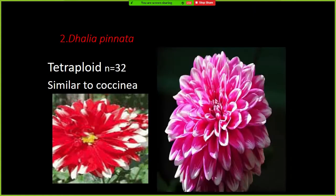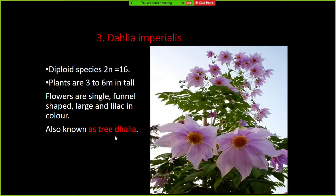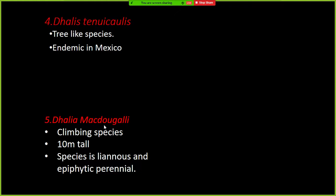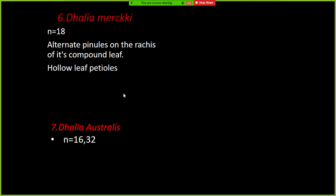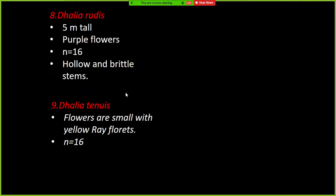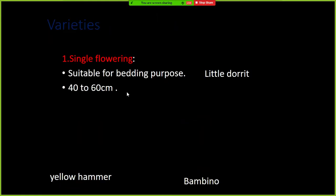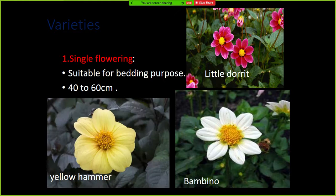Among the Dahlia species, Dahlia coccinea and Dahlia pinnata are notable. Dahlia imperialis is also called tree Dahlia — this is important for objective type questions. Dahlia tenuicaulis, Dahlia merckii, and Dahlia australis are other species. Dahlia australis and Dahlia rudis are also recognized species.